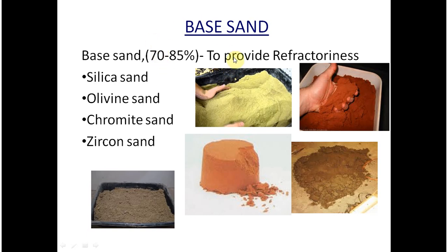Base sand is used to provide refractiveness. There are many types: silica sand, olivine sand, chromite sand, and zircon sand. The main composition of base sand should be 70 to 85 percent of the total molding sand composition, along with binder, moisture, and additives.